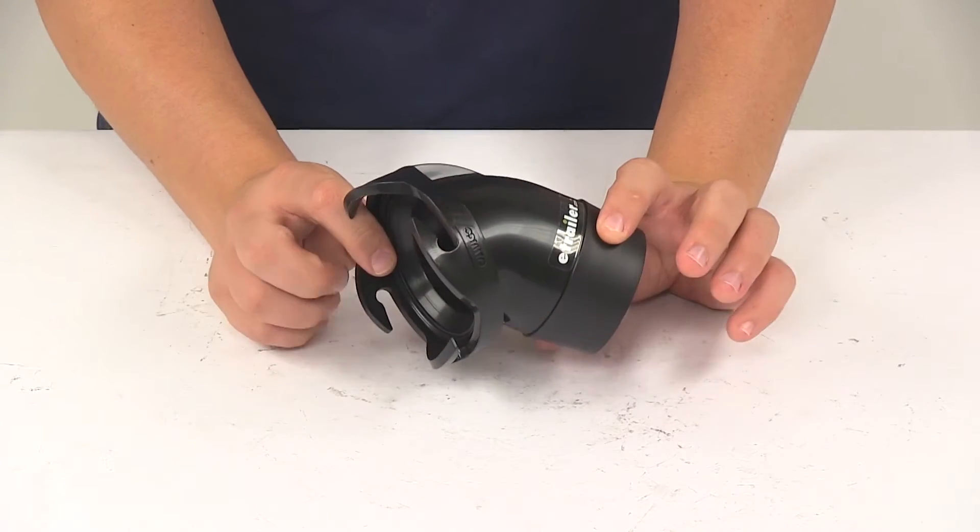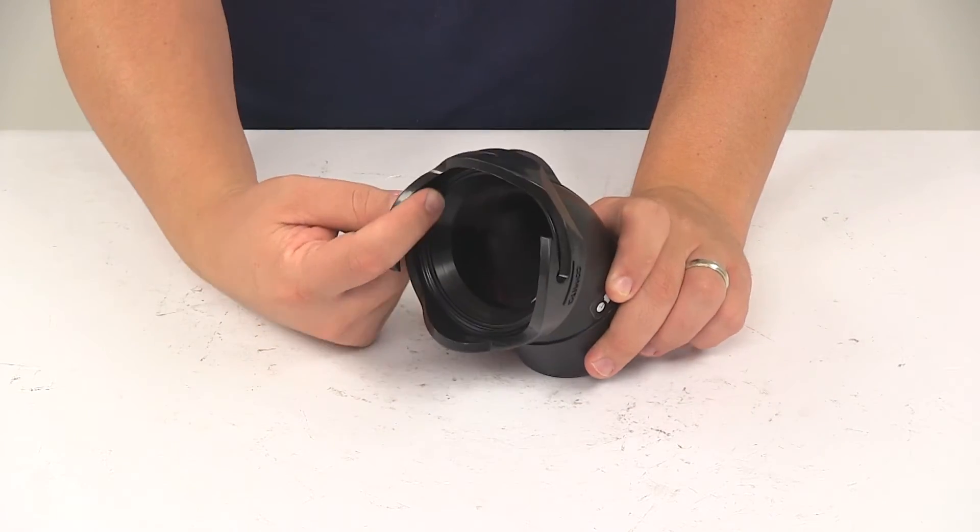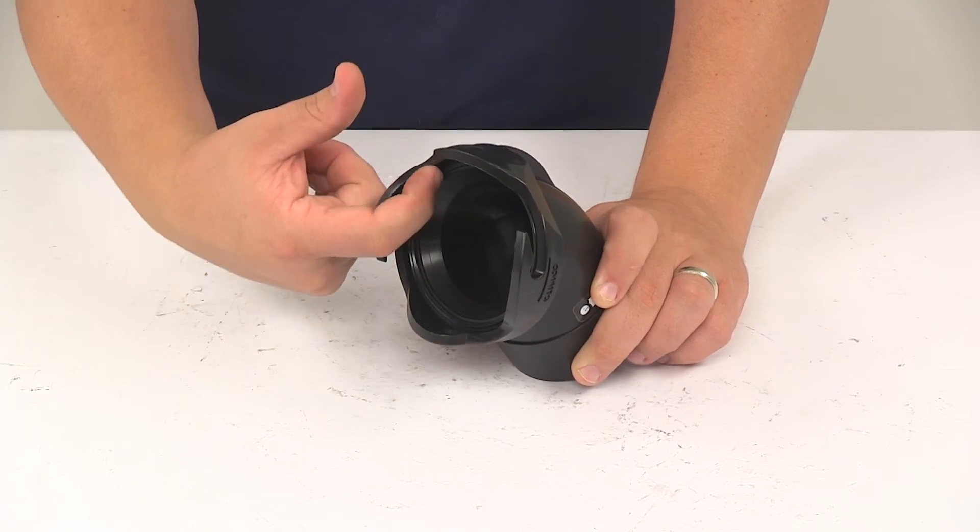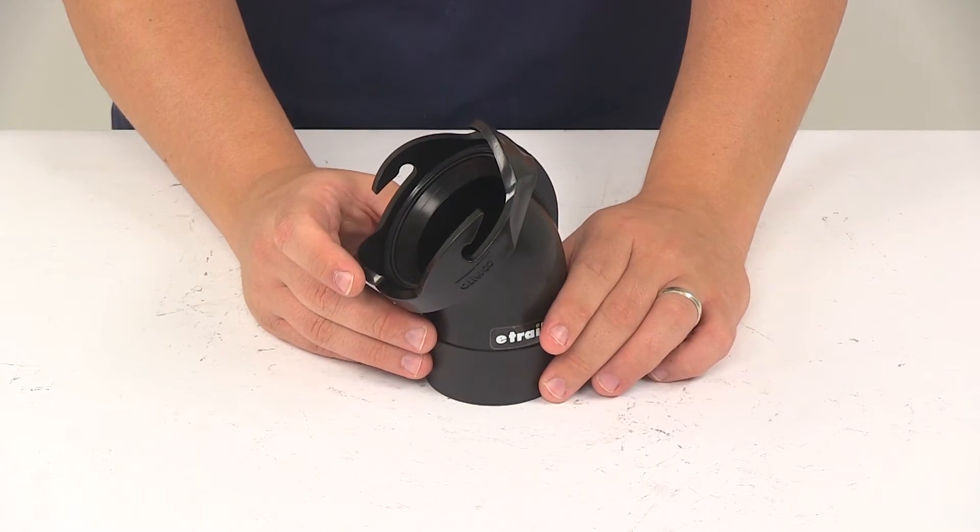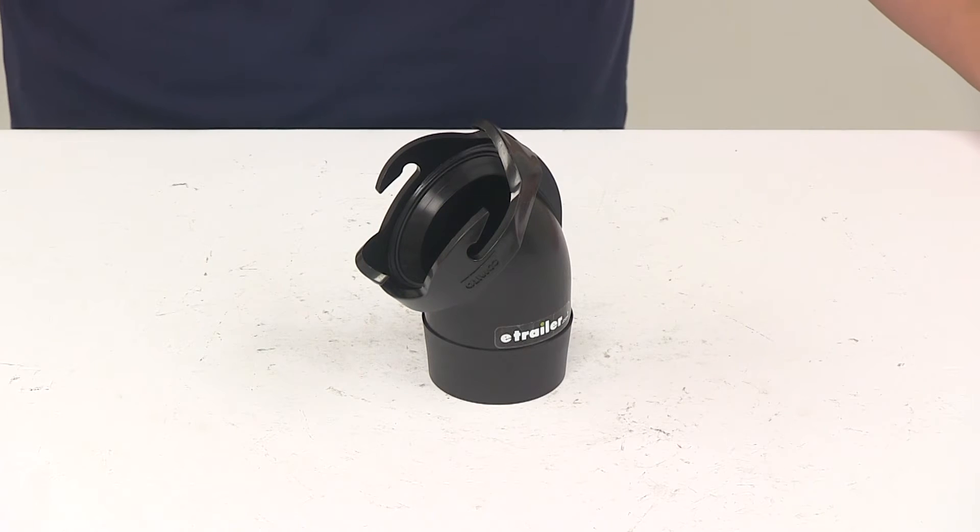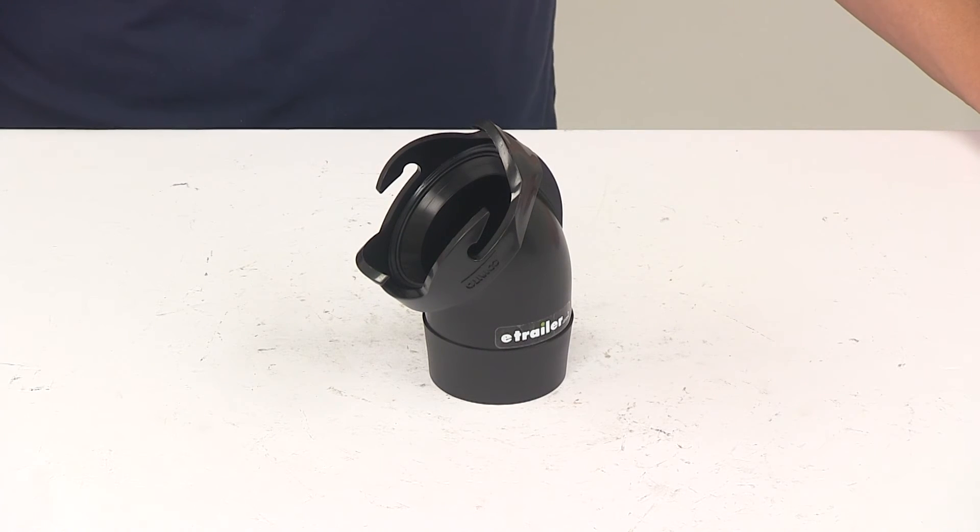The compact adapter will store inside of a four inch bumper and it's going to feature an internal seal right here which is going to offer leak proof performance. That's going to do it for today's look at the Kamco 45 degree sewer hose adapter.